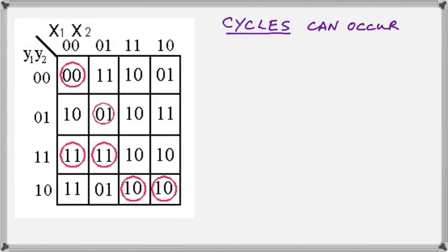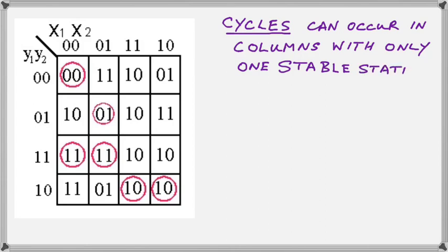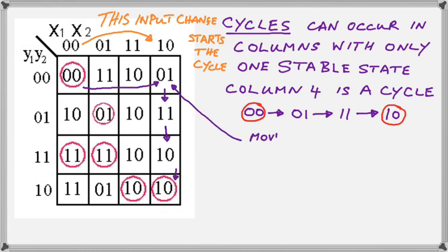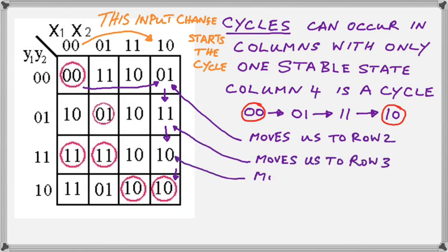Now, what about a cycle? A cycle can occur in a column with only one stable state. And we see that column 4 satisfies that condition, but so does column 3. So why do we have a cycle in column 4 instead of column 3? Well, the values in column 4 change. We move from 1 to 3 to 2, as shown.